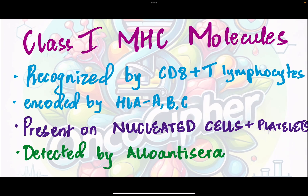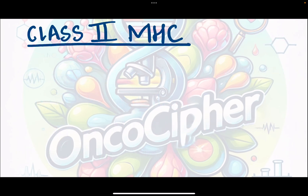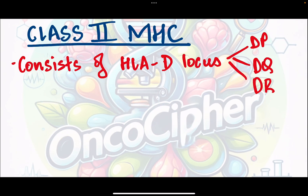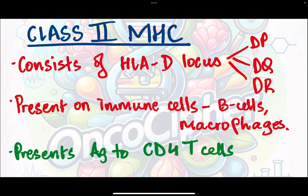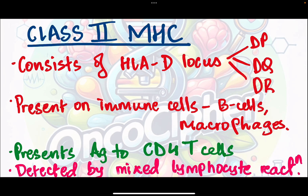All of these are extremely important MCQ questions. Class 2 MHC molecules consist of HLA D locus: DP, DQ, DR. They are present on immune cells, which are B cells and macrophages, and are derived from extracellular microbes. They present antigen to CD4 T lymphocytes, and they are detected by mixed lymphocyte reaction.